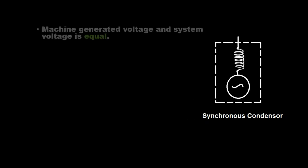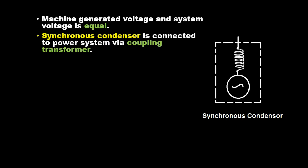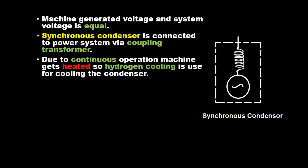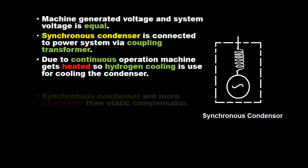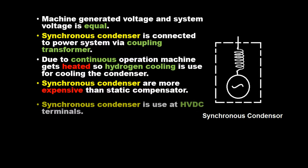The machine-generated voltage and system voltage are equal. The Synchronous Condenser is connected to the power system via a coupling transformer. Due to continuous operation, the machine gets heated, so hydrogen cooling is used. Synchronous Condensers are more expensive than static compensators.